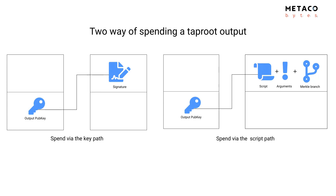Hi everybody, it's Nicolas Daurier, and today I will present a topic that is a bit more advanced than my last video about Taproot, which is how to use MuSig for aggregating signatures between different signers. I will dive into a bit of detail, but first a small recap about what my last video covered — I advise you to see it prior to this video.